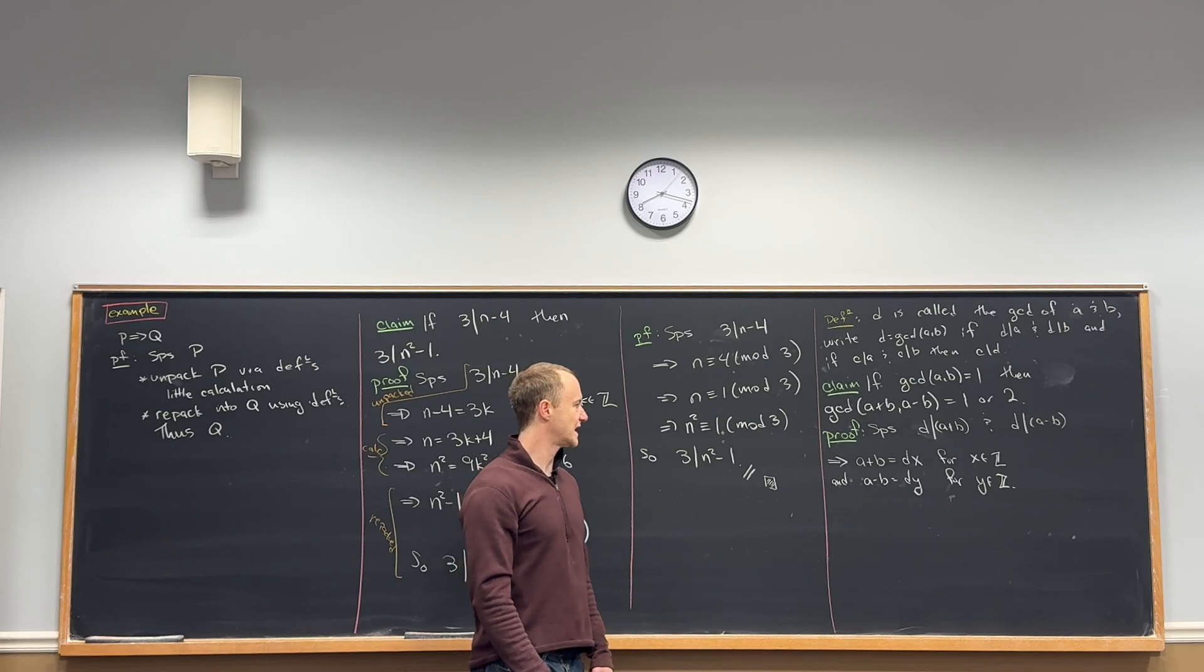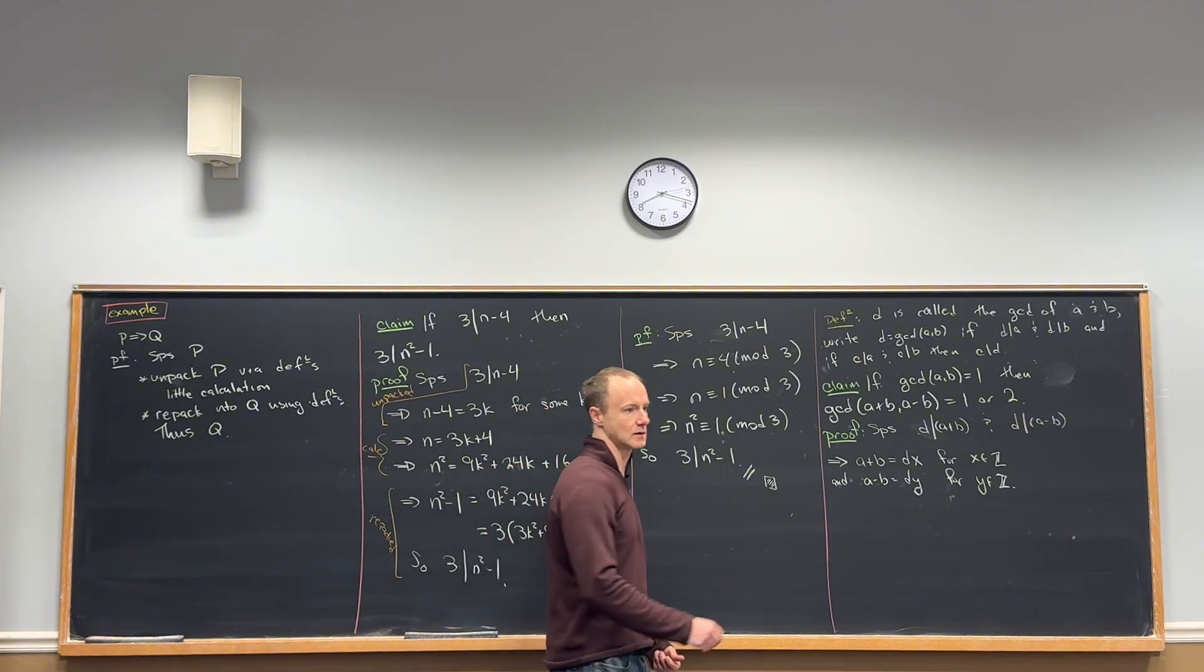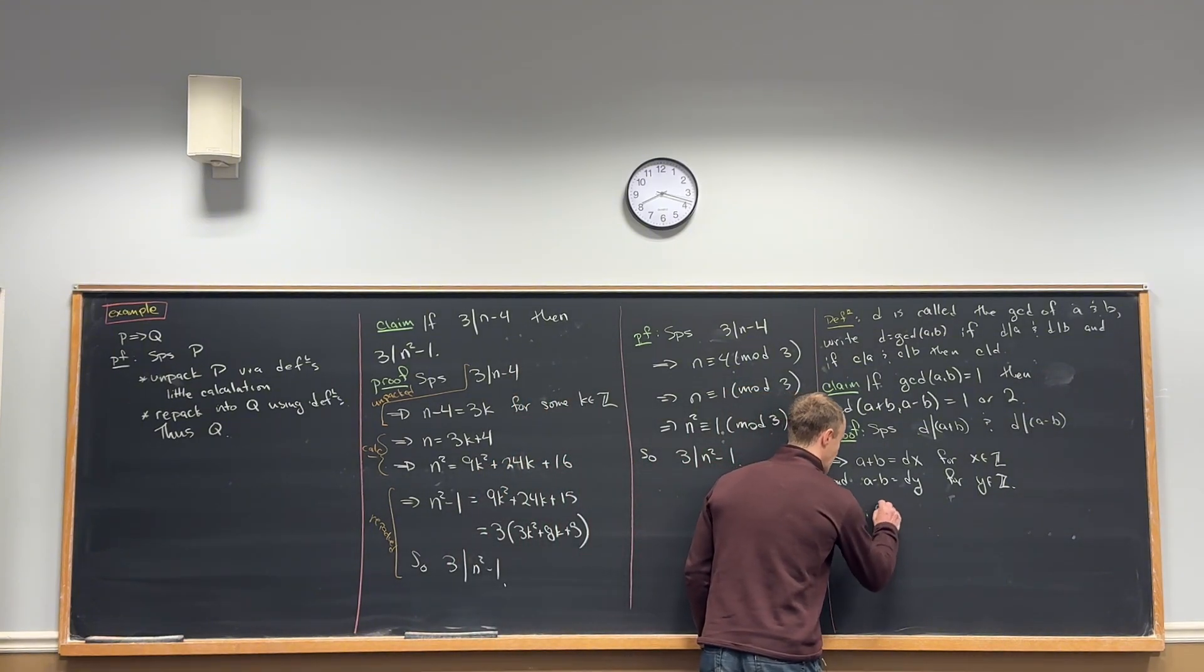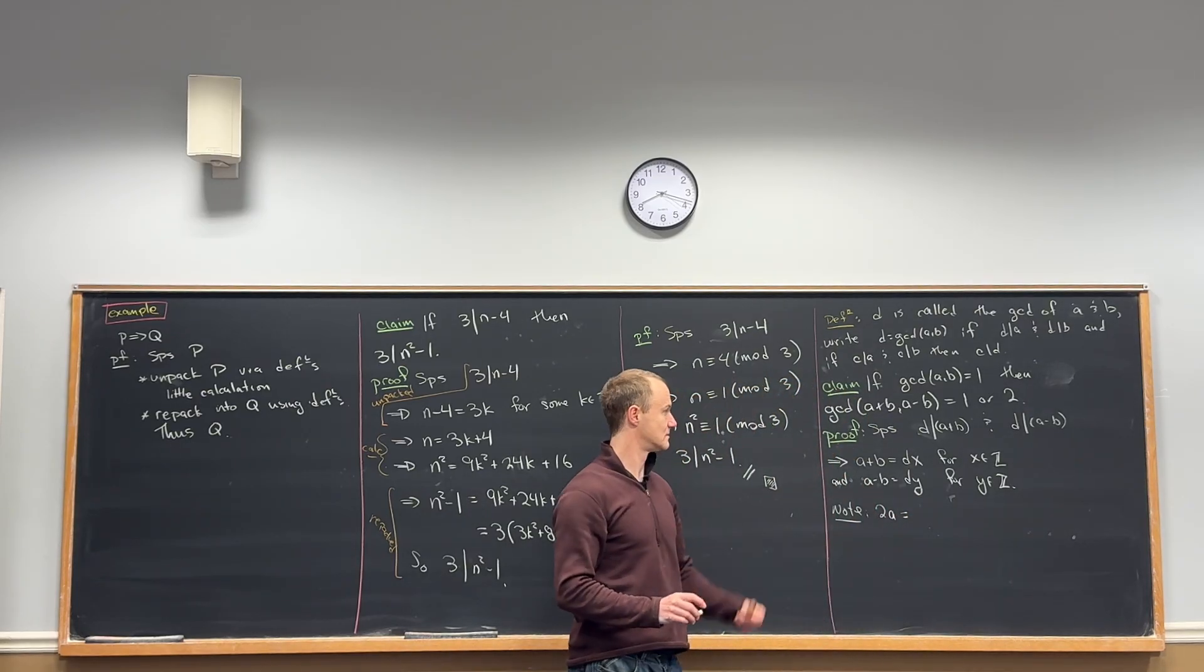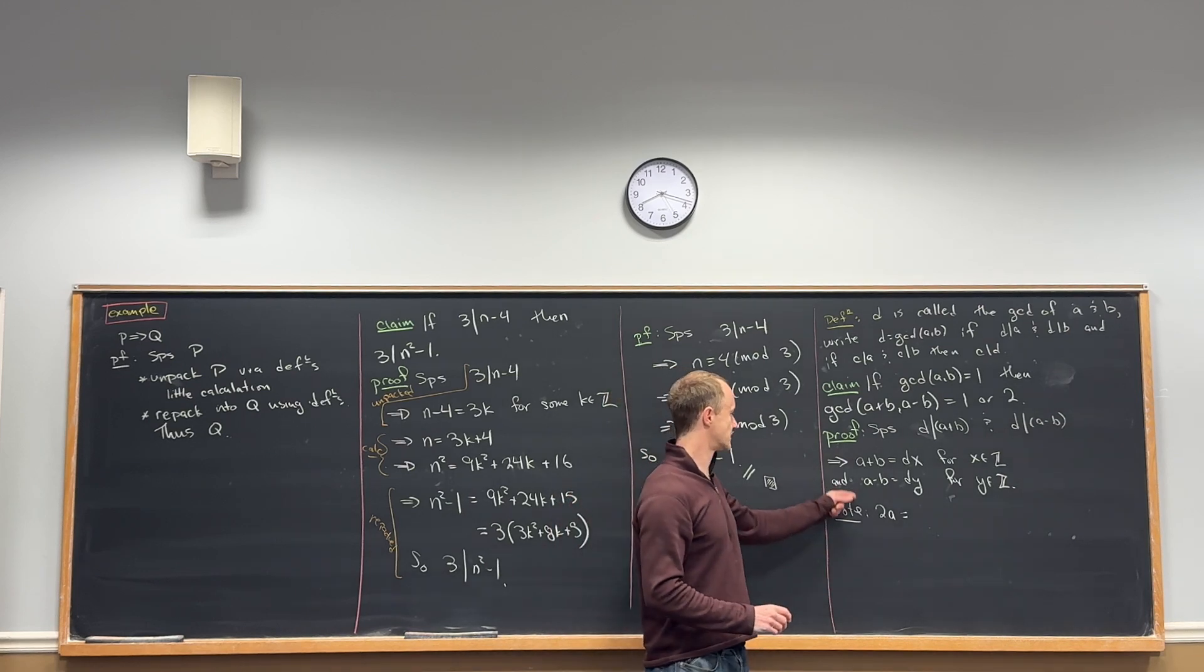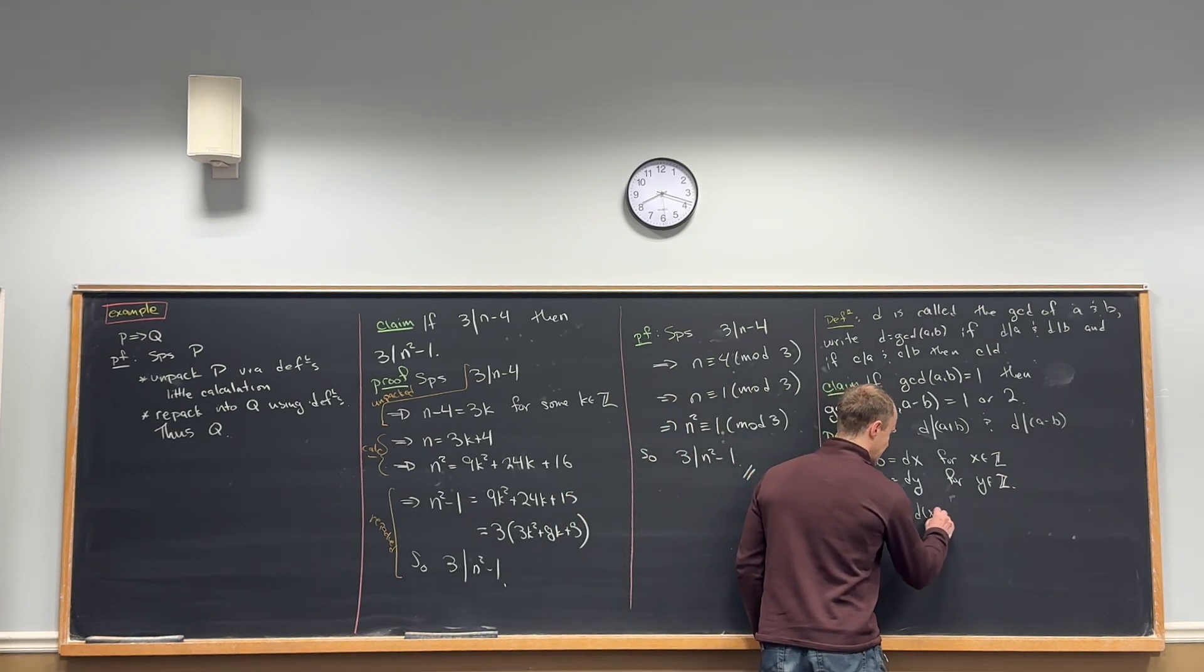But now we can solve that for not quite A and B, but 2A and 2B. Let's note that we can write 2A as what? We can add those two equations. D times the quantity X plus Y.